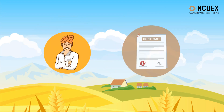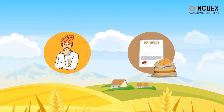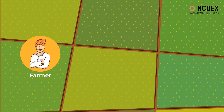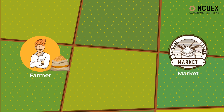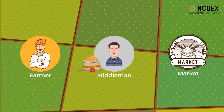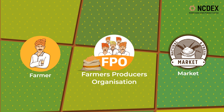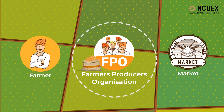This video covers how farmers can benefit from commodity derivatives. Farming in India is fragmented, with most farmers having very small land holdings. The small sizes mean the quantity they grow is small, and that in turn forces them to sell to village-level middlemen.